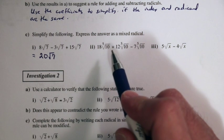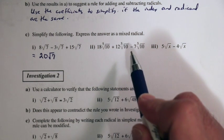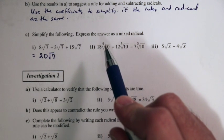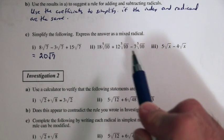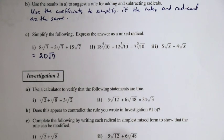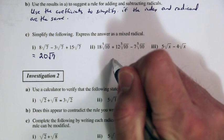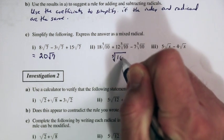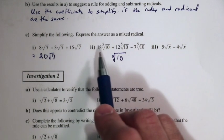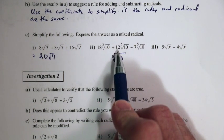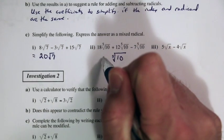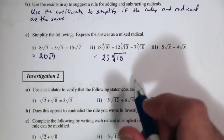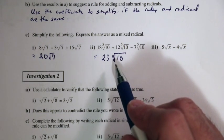Let's take a look at part two: 18 times the 5th root of 10, plus 12 with the 5th root of 10, minus 7 of the 5th root of 10. The indexes are the same and the radicands are the same, so we can simplify using the coefficients: 18 plus 12 is 30, minus 7 is 23. So there are 23 of that quantity, the 5th root of 10.